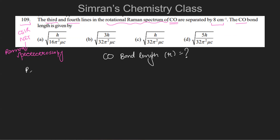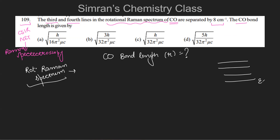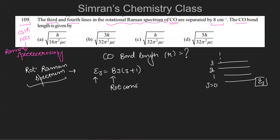In the rotational Raman spectrum, we have a lot of energy levels. The energy of each level is given by E_j = B·j(j+1), where E_j is the energy of the various rotational levels, j is the rotational quantum number starting from 0, 1, 2, 3, and so on, and B is the rotational constant.